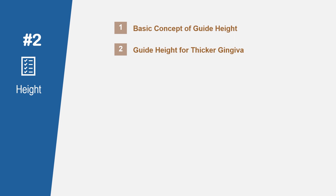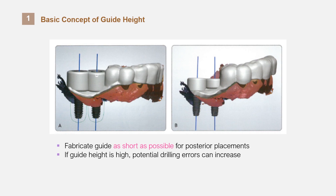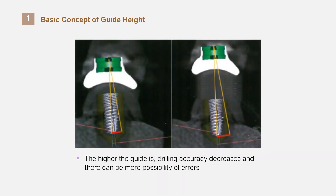Now let's look at the height of the guide. The height of the guide needs to be as low as possible in the posterior area. If the guide is tall, accuracy of the drill decreases and the angle may go askew, so it needs to be produced as low as possible. If the guide is tall, the patient needs to open the mouth wider during the procedure, which is very painful and will also make drilling more difficult. Even for the convenience of the surgery, the height of the surgical guides needs to be designed as low as possible.